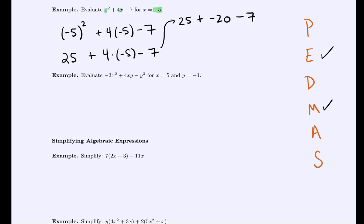So in the end we would get 25 minus 20 minus 7 and we should get negative 2 as a result.